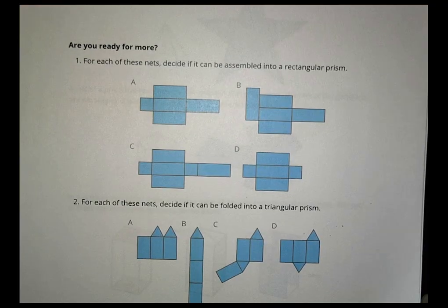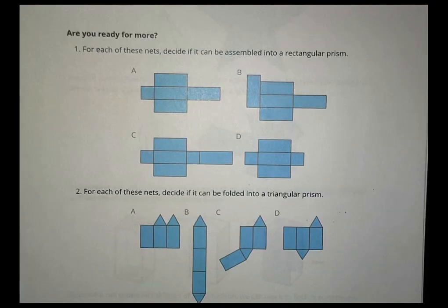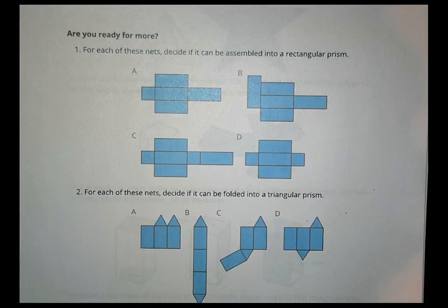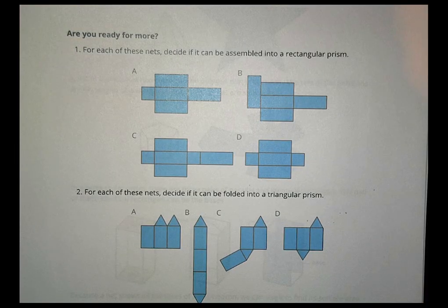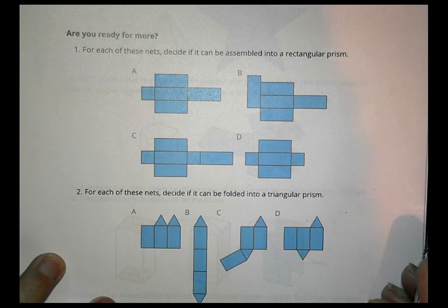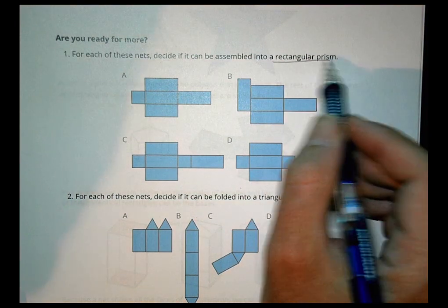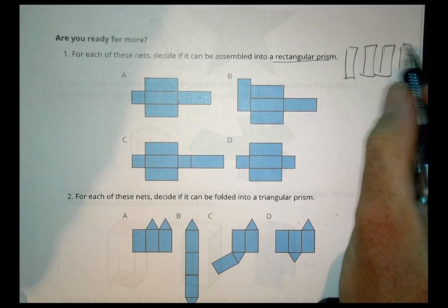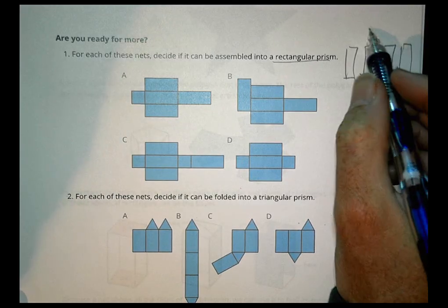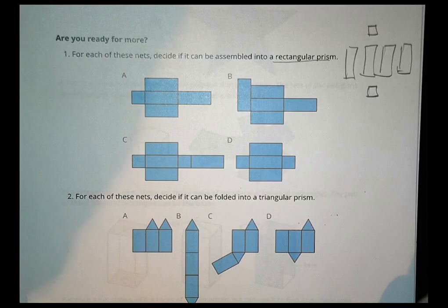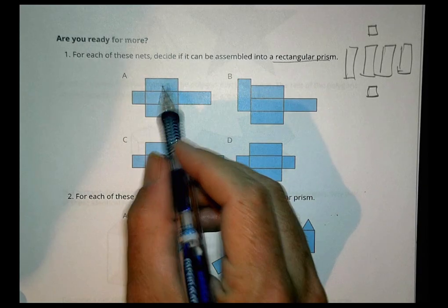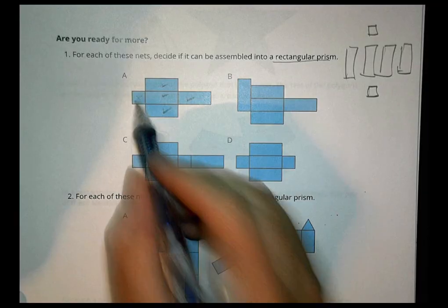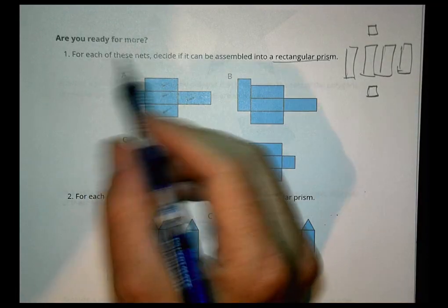Now, you may or may not have done the next part: Are You Ready for More? It says for each of these nets, decide if it can be assembled into a rectangular prism. There's a bit of spatial visual awareness here. To make a rectangular prism, we're going to need at least four rectangular pieces, and then we need some sort of top and a bottom. Here we have four rectangles and only one top — no bottom. This would not work.